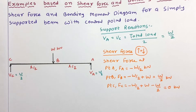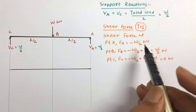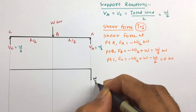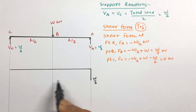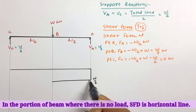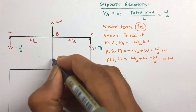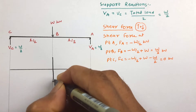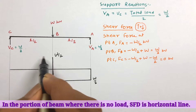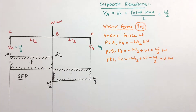Now let us draw the shear force diagram. This is the reference line. Starting at point A, the shear force is negative W/2, so we take this ordinate W/2 in the downward direction. From A to B there is no load, so we join with a straight horizontal line. At B the shear force jumps to plus W/2, shown above the reference line. From B to C there is again no load.